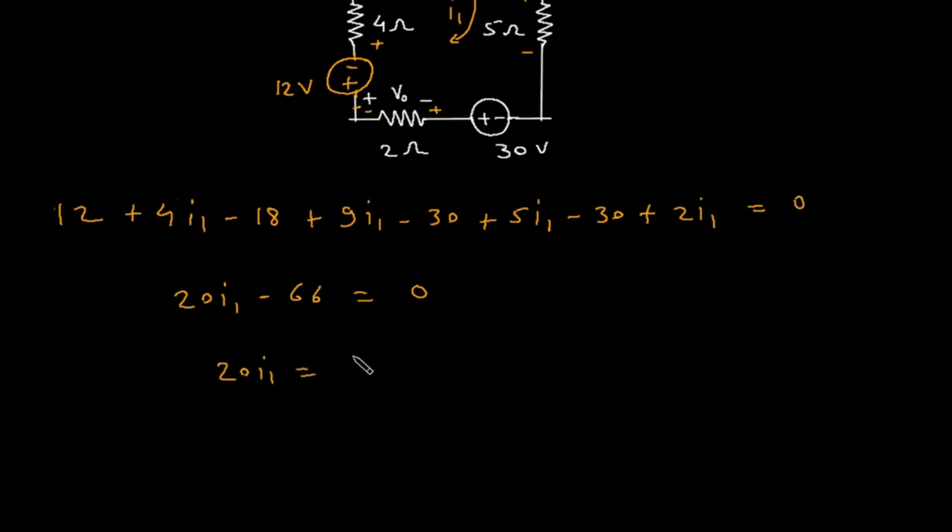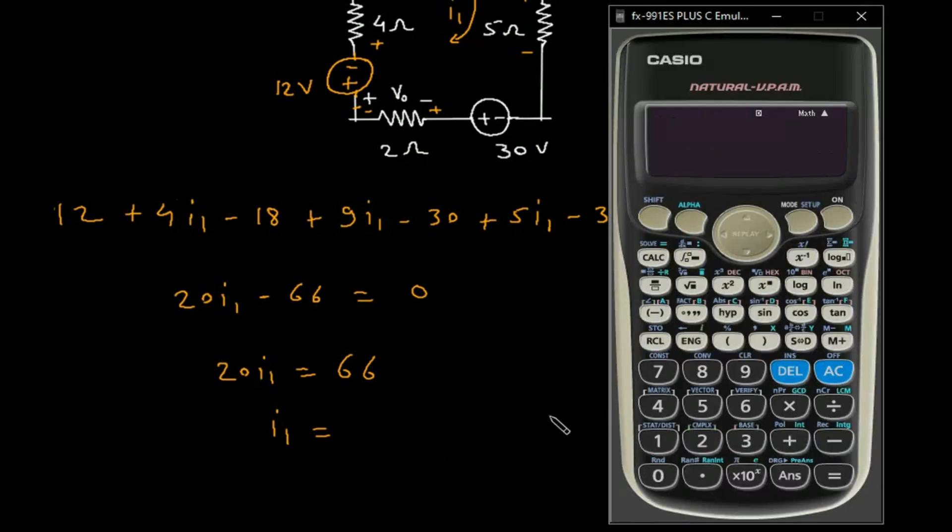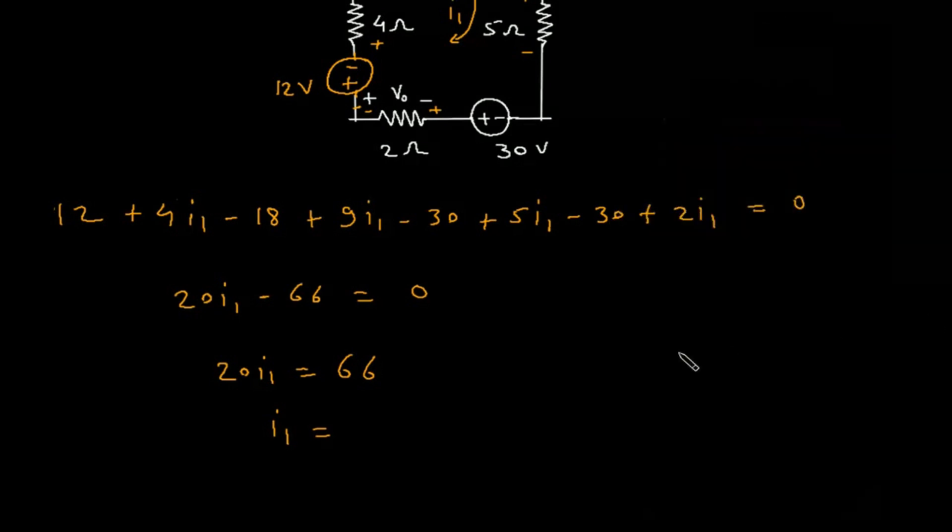So 20 I1 equals 66. Therefore I1 equals 66 by 20, which is 3.3 amperes.